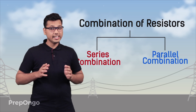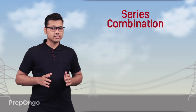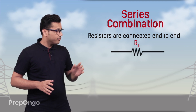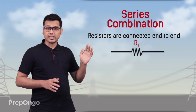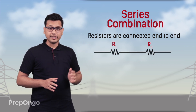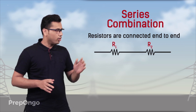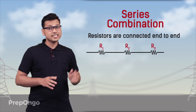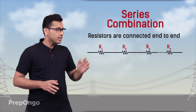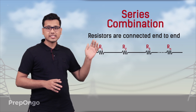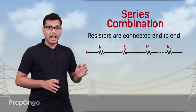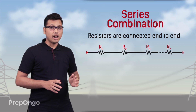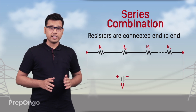In series connection, all the resistors are connected end to end. That means one end of the first resistor is connected to the second, the other end of the second resistor is connected to the third, and so on. Finally, the first end of the first resistor and the other end of the last resistor are connected to the terminals of the battery.